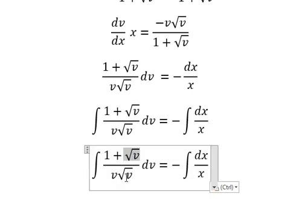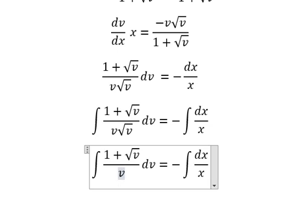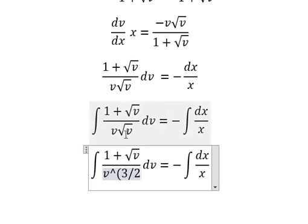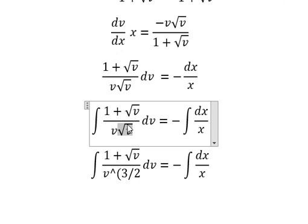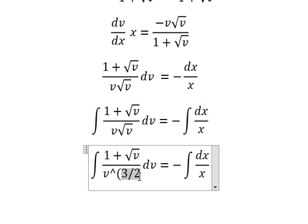For the left side integral, we can rewrite this as 1 over v to a power. Since v square root of v equals v to the 3/2, because the square root is 1/2 plus 1, that's why we have 3/2.